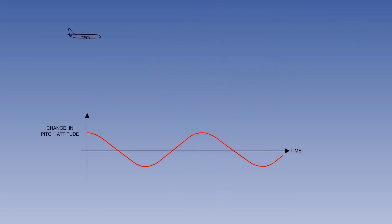Longitudinal dynamic stability concerns the variation of displacement with time following a disturbance. It consists of two basic types of oscillation: long period oscillation — the phugoid — and short period oscillation. We will consider the long period oscillation, the phugoid, first.